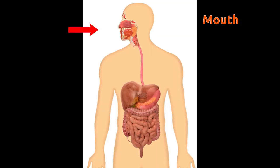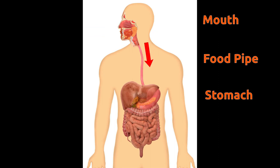Different organs work together for a common activity. These organs together form an organ system. For example, when we eat food, we cut it in the mouth by teeth. This food then reaches the stomach through the food pipe.